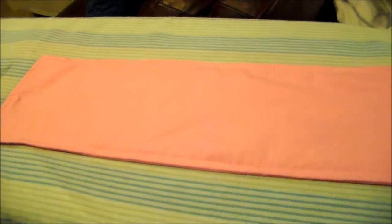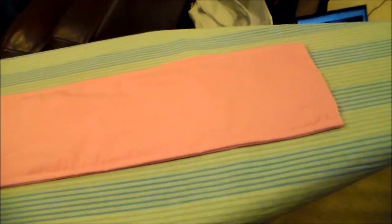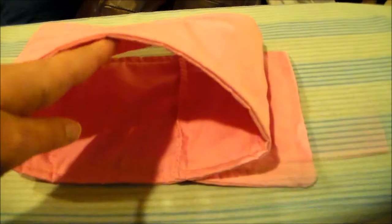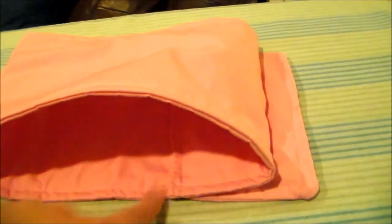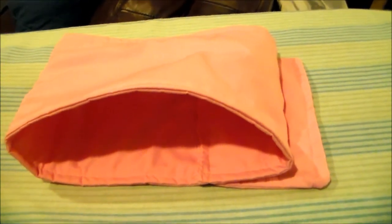Now turn your obi bow right side out, and topstitch along the edge. Now you're going to fold the obi bow around so that the raw edge is on the inside, and sew it down. And with that, the obi is done.